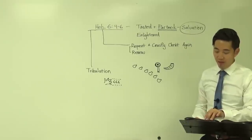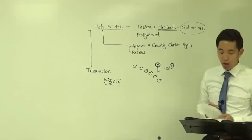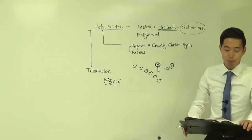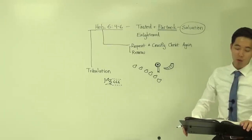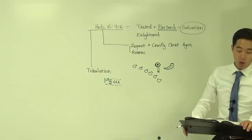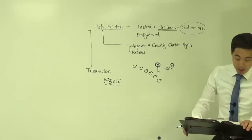Then shall the kingdom of heaven be likened unto ten virgins, which took their lamps and went forth to meet the bridegroom. And five of them were wise and five were foolish. They that were foolish took their lamps and took no oil with them. But the wise took oil in their vessels with their lamps. While the bridegroom tarried, they all slumbered and slept. Let's see over here. Verse 8.